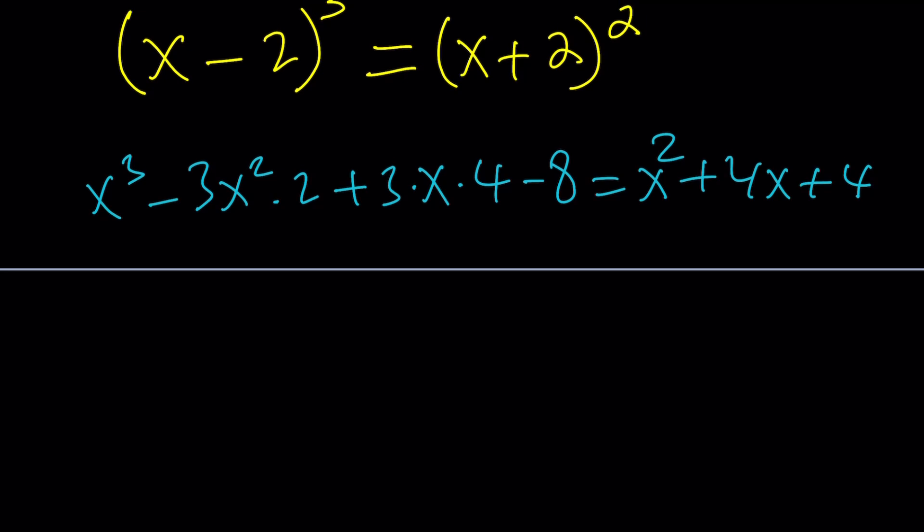Let's simplify this, put everything on the same side. This is minus 6x squared minus x squared, minus 7x squared. This is 12x minus 4x is going to give us plus 8x, and then minus 12, minus 8, minus 4. And it's equal to 0, and this is a cubic equation.